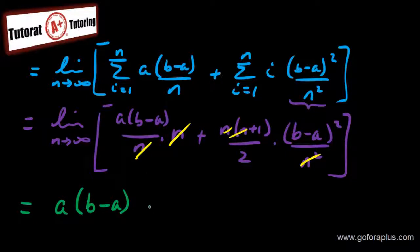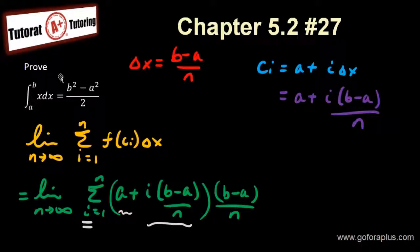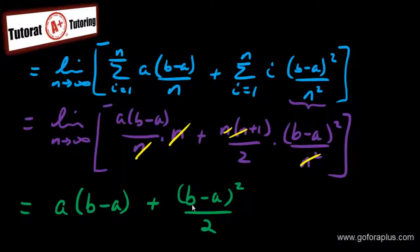So first term here, plus second term, which is b minus a or this square over 2. Now I have to simplify this to make it look like what the question is asking me. So let's do this. I'll take this into my second page. Let me recopy that though. A times b minus a, let me make it nicer. B minus a plus b minus a, the whole thing square over 2.